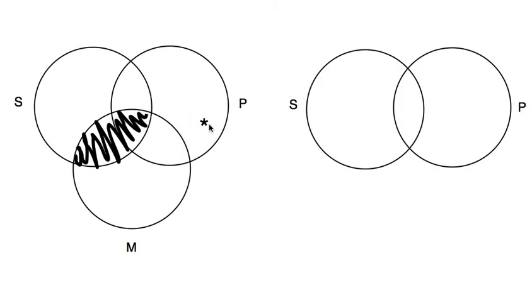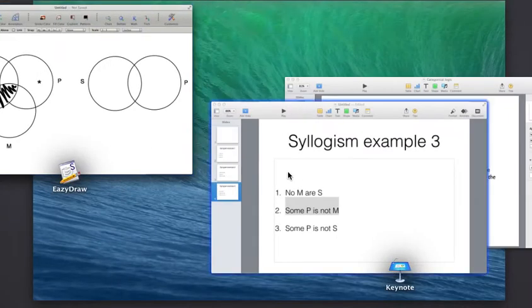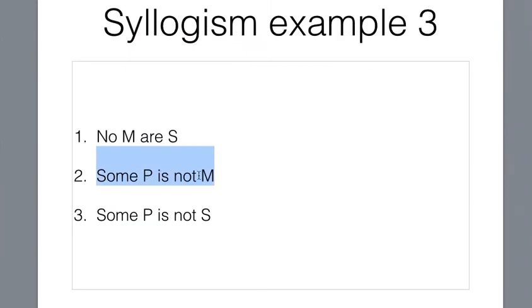Now, the question you have to ask yourself is, is this right? Because on this Venn diagram, there are three categories represented. And if I put an individual right here, I'm also representing that individual as not belonging to the category S. So this says something is a P, but it's not an M, and it's not an S. Look at my premise, though.